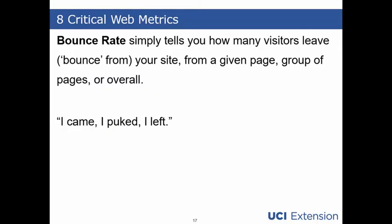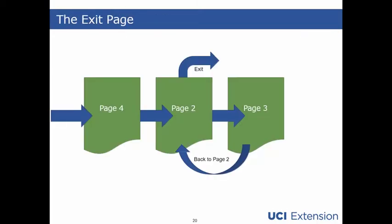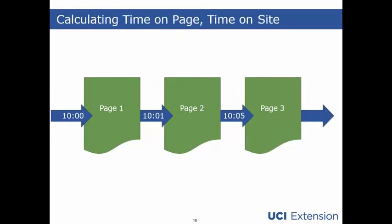Bounce rate tells you how many visitors came to your site or a page on your site and left without taking another action. The click path could go from page four to page two, then to page three, including the completion of a goal or a conversion along the way, and then back to page two before leaving the site entirely.